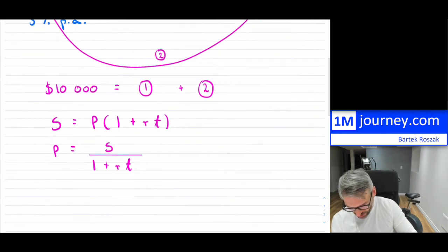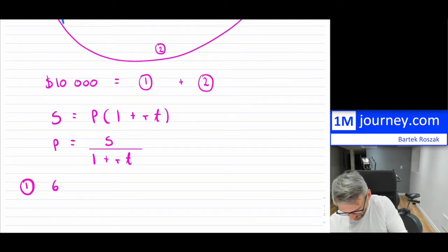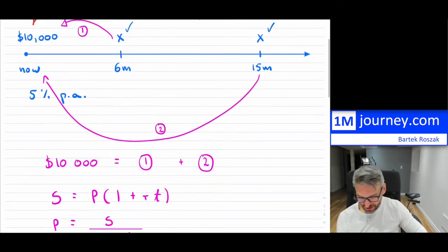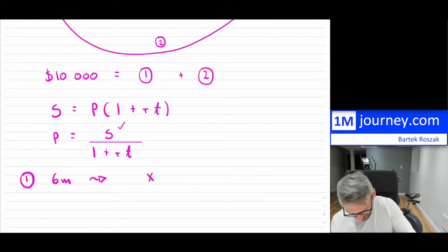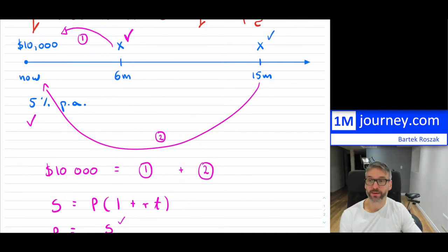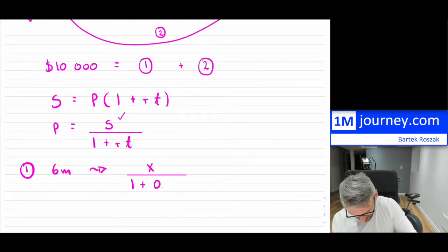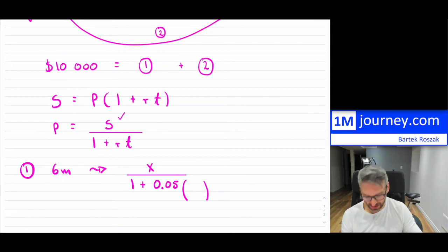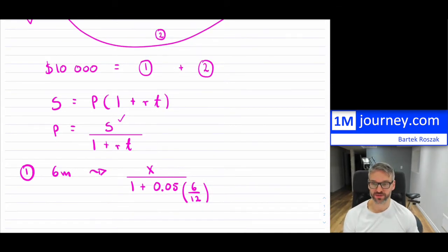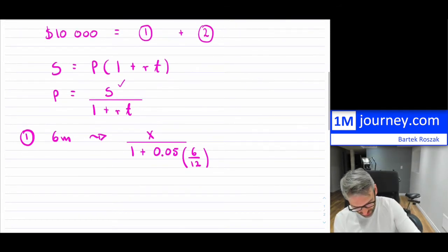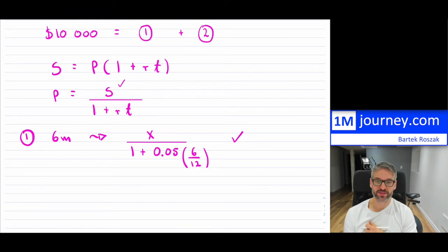For the first payment at six months: bringing it back gives us X divided by (1 + 0.05 × 6/12). Remember, we have to change the rate to decimal — so 0.05 — and T must be in years, so that's 6 over 12, which is half a year. I don't know what X is yet — that's what I'm trying to find — but I know all the values in the denominator.